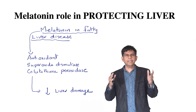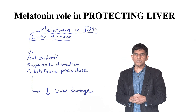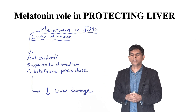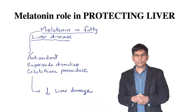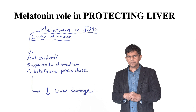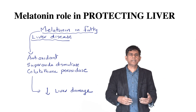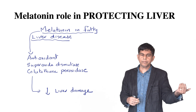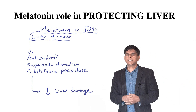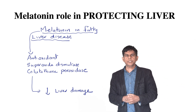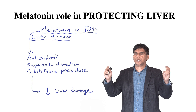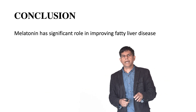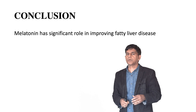Now let's look at how melatonin can protect the liver. In fatty liver disease, the main thing to understand is that melatonin acts as an antioxidant, working through superoxide dismutase and glutathione peroxidase to decrease oxidative damage — as discussed previously — and thereby mainly decreasing liver damage by acting as an antioxidant.